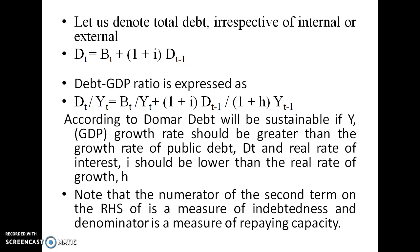The same equation can be rewritten as a debt ratio. The debt-to-GDP ratio is expressed as DT divided by YT, where YT represents GDP. Dividing each term on both sides by YT gives the debt-to-GDP formulation, and the past debt term is also adjusted by dividing by its own rate of growth, (1 + i) and (1 + h).